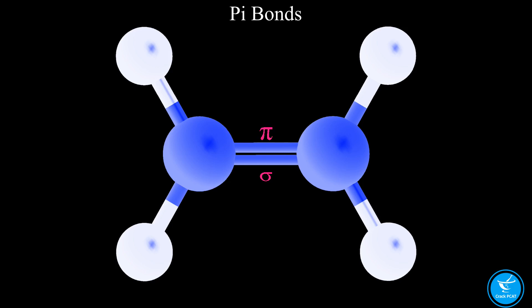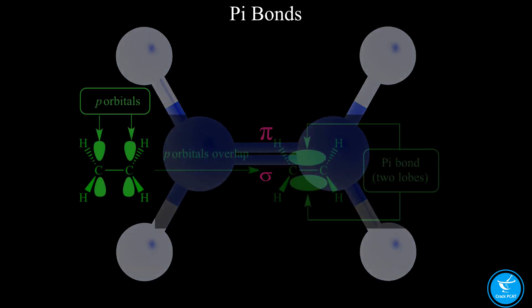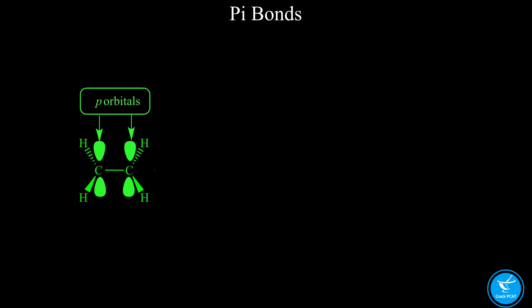Pi bonds are formed from the overlap of p orbitals on adjoining atoms. Pi bonds are perpendicular to sigma bonds.